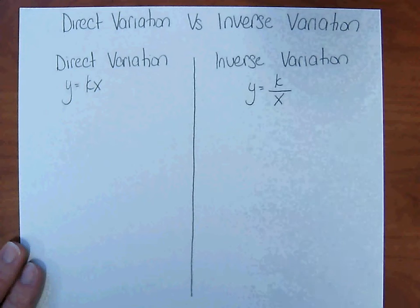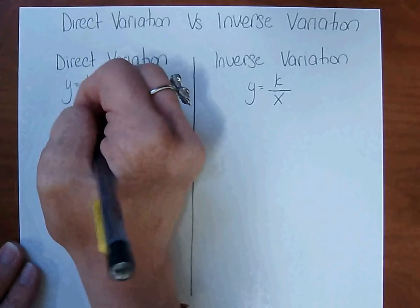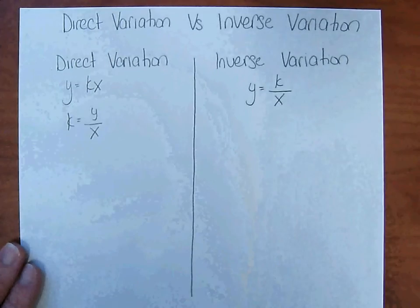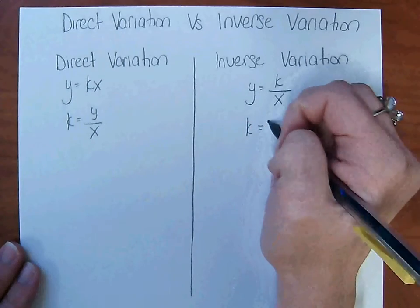If we take the equations and solve them both for k, with direct variation, k equals y over x. And inverse variation, k equals xy.